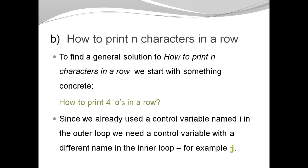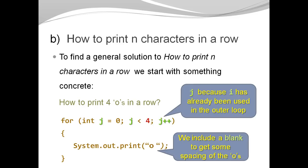So we need a new name for our inner for loop. And by convention, we just take the next letter of the alphabet, which is j. So here, I have a for loop. Integer j is 0, j less than 4, j plus plus, and then we do something. We're going to print a circle.